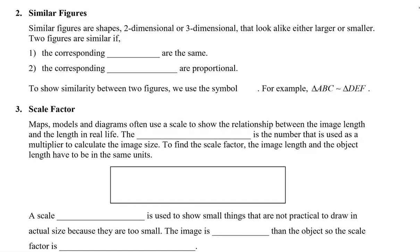Similar figures are shapes that can be either two-dimensional or three-dimensional that look alike — either larger or smaller — but not necessarily the same size. Two figures are similar if the corresponding angles are the same and the corresponding sides are proportional, and I'll show you what this means in a little bit.